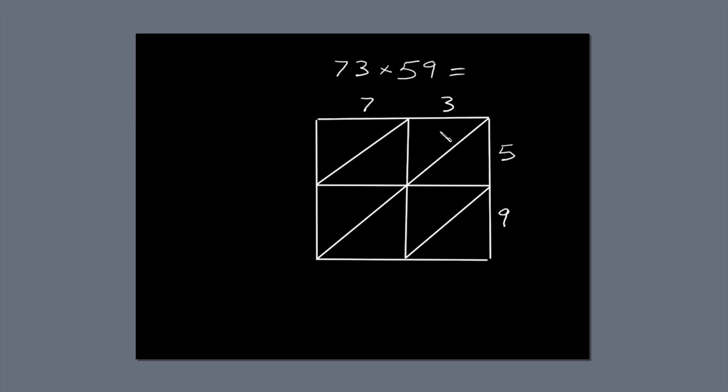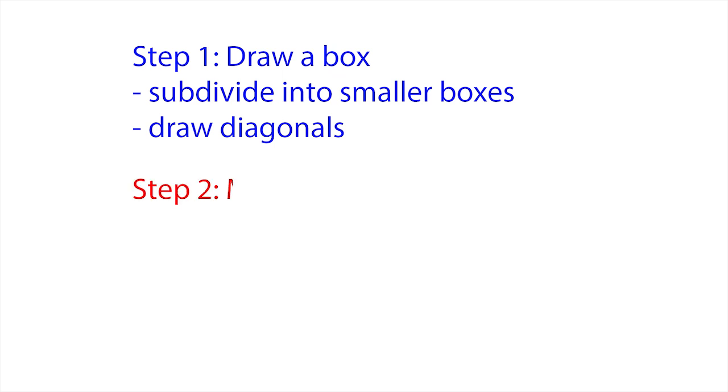Let's start with 3 times 5. That's 15. The 1 goes above the diagonal, and the 5 below. 3 times 9 is 27. Again, the 2 goes above the diagonal, and the 7 below. Now let's fill in the blanks in the other column. 7 times 5 is 35. 7 times 9 is 63. That's step 2. Multiply and fill in the blanks with your answers.